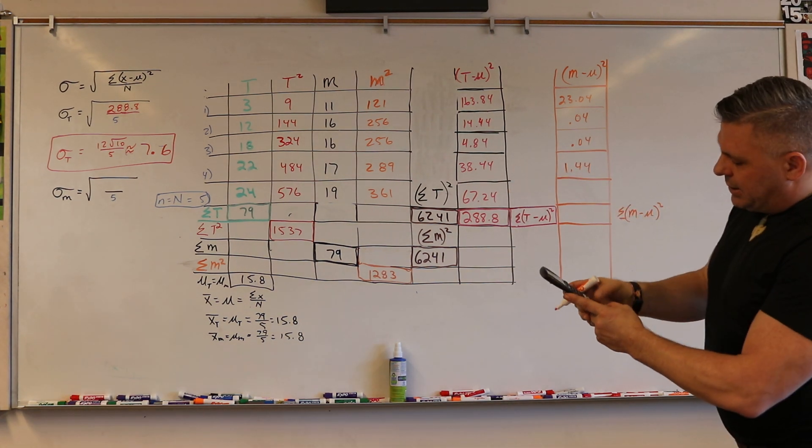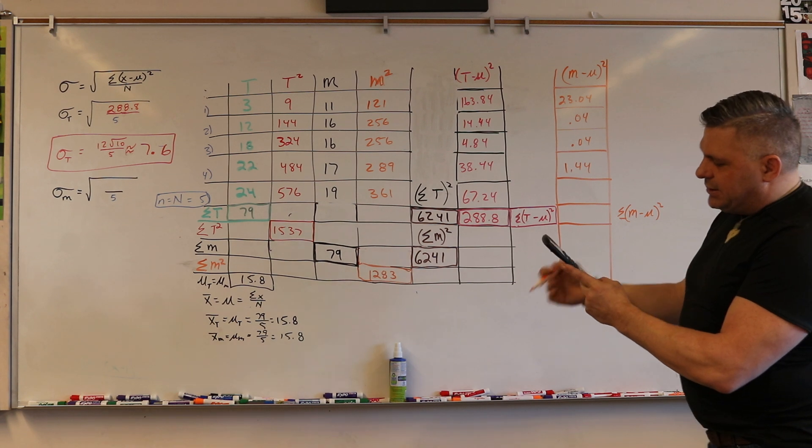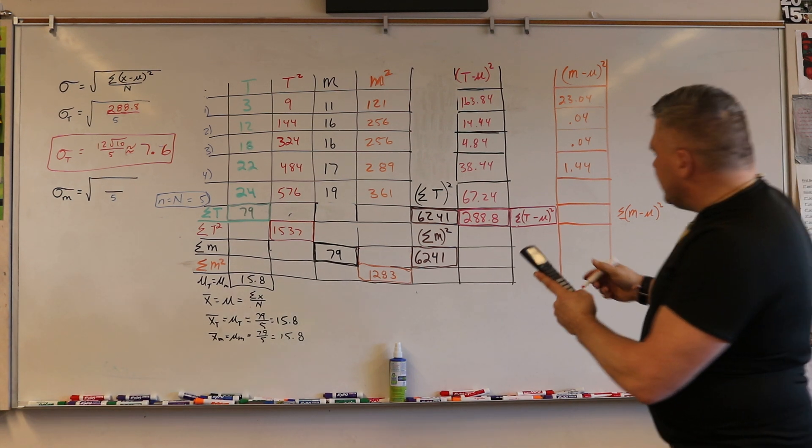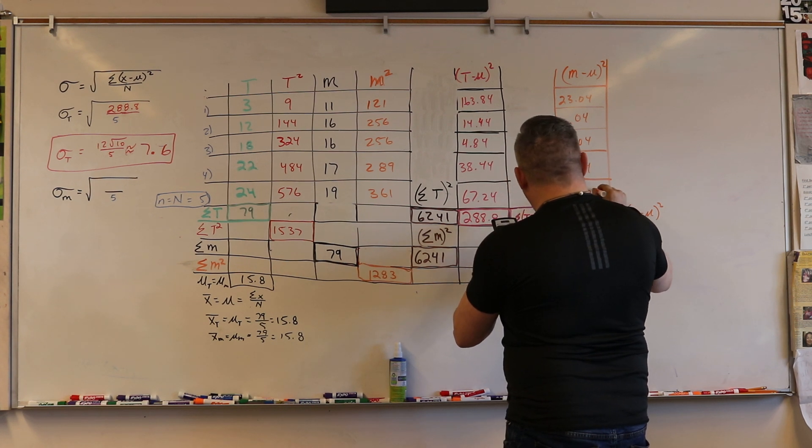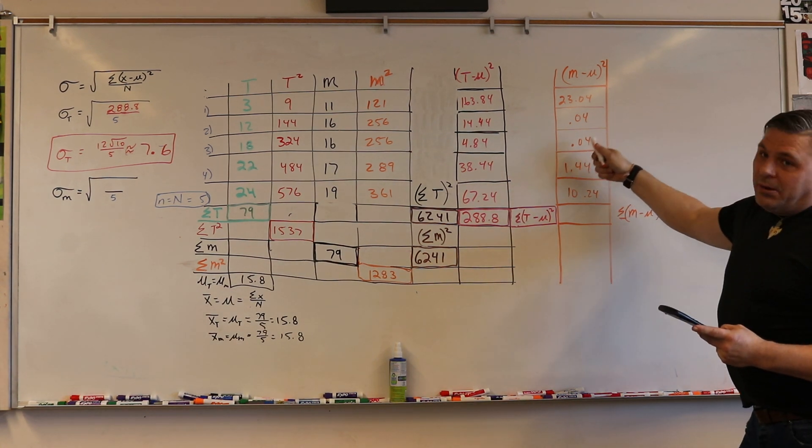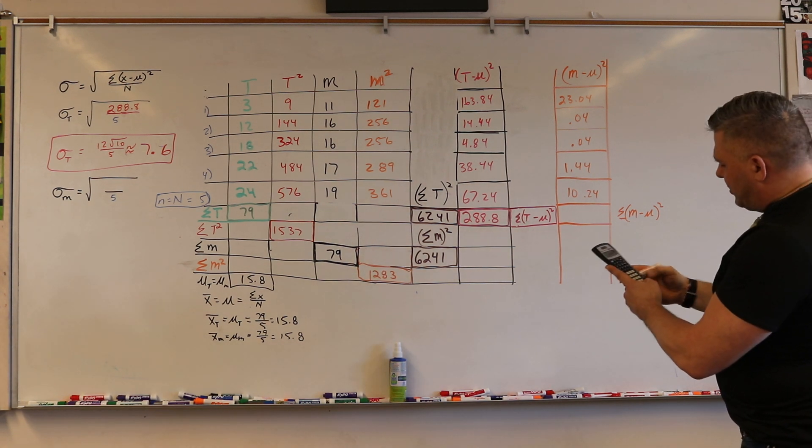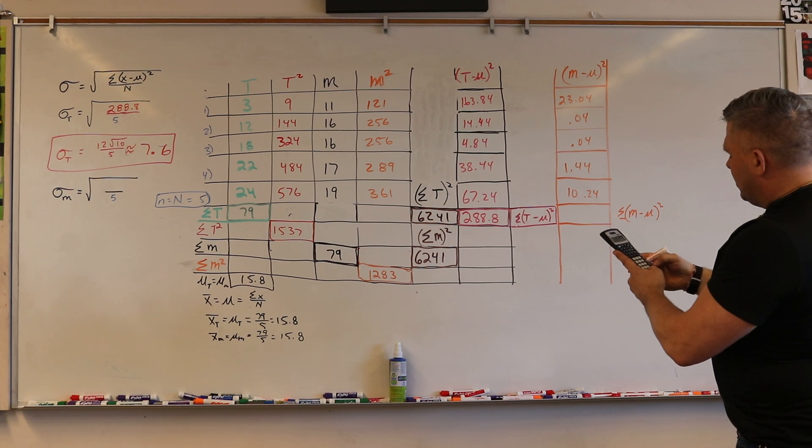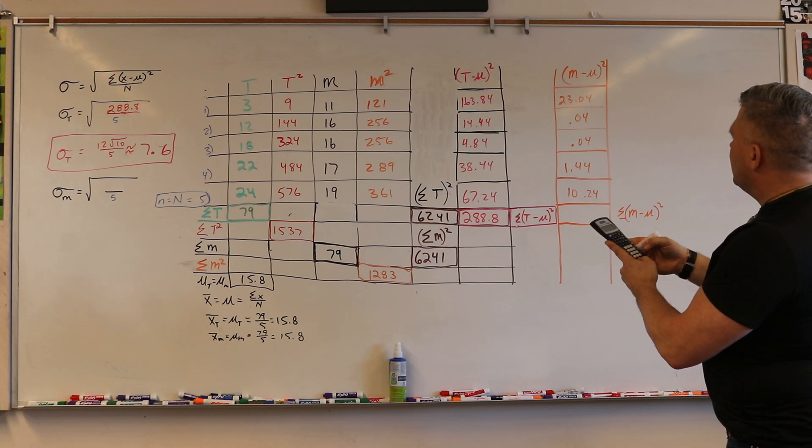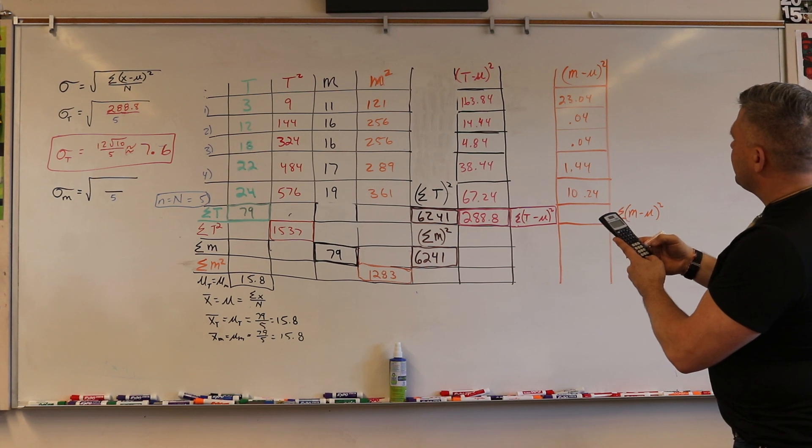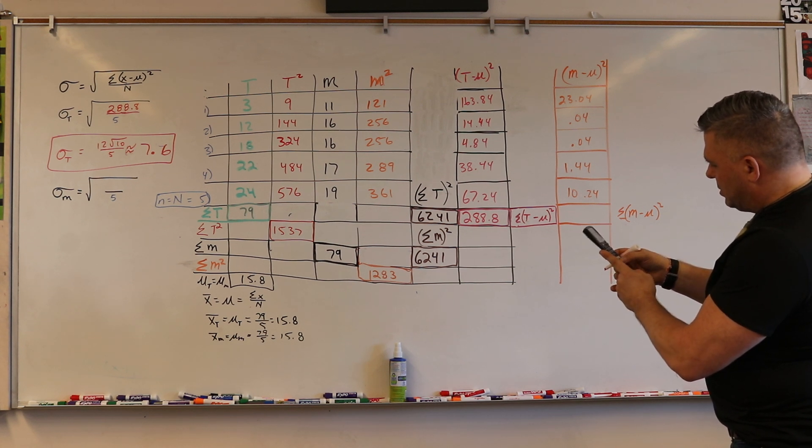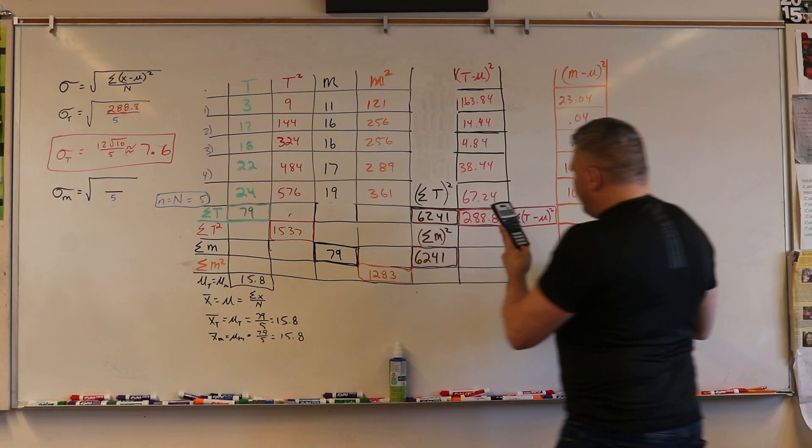Then we're going to take 19 minus 15.8 and we're going to get 3.2, and then we square it, that's 10.24. Then we're going to find the sum of that, so I'm going to add 10.24 plus 1.44 plus 0.04 plus 0.04 plus 23.04, equals, and I get 34.8.